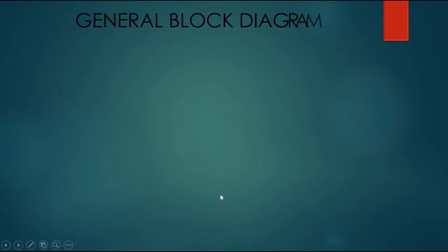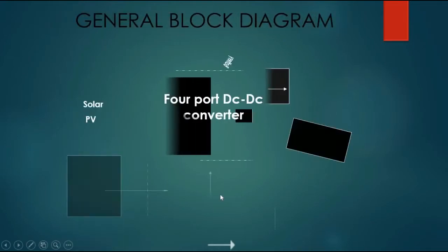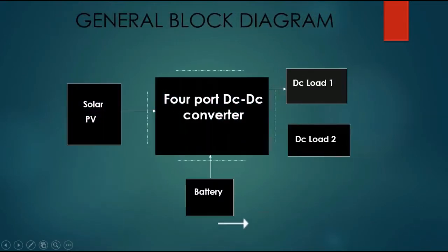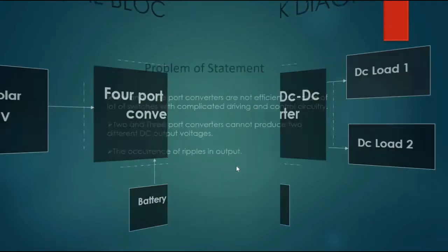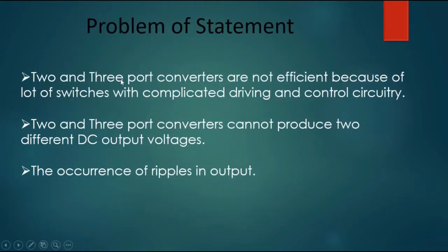General block diagram: Solar PV, DC Load 1, Battery, 4-port DC-DC Converter, DC Load 2. Problem statement: 2- and 3-port converters are not efficient because of many switches with complicated driving and control circuitry. Additionally, 2- and 3-port converters cannot produce two different DC output voltages.